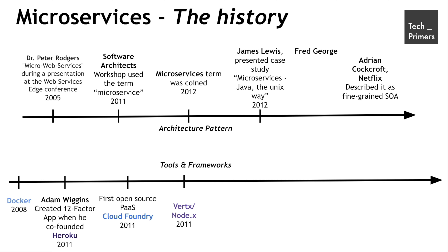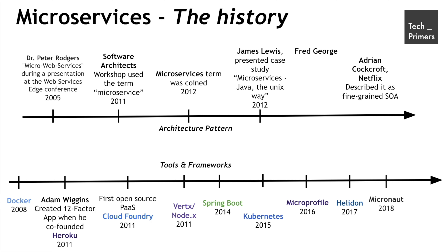Looking at the tools which got developed after that: in 2014, Spring Boot was founded and people started heavily containerizing their applications. In 2015, Kubernetes was created, which is now the de facto platform for running containerized workloads. In 2016, Microprofile, another prominent framework, was created for building microservices-based applications. In 2017, Oracle launched Helidon. In 2018, Micronaut was created by the initial founders of Spring Boot to produce a faster and more lightweight microservices framework. Finally, in 2019, Red Hat created Quarkus, which is another microservices-based framework.